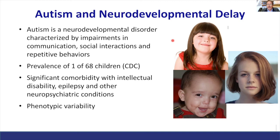The CDC estimates now one out of every 68 children is on spectrum. And important for this talk is really the idea that there's significant comorbidity with intellectual disability, epilepsy, and other neuropsychiatric conditions.